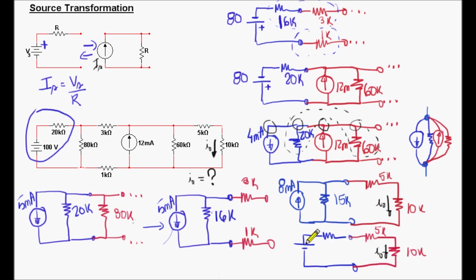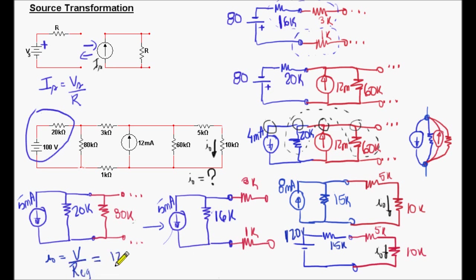Now we have a simple series circuit — all resistors are in series, simple to calculate. The resistor here will be 15k, and here I multiply 8 milliamps times 15k, giving me 120 volts. Now it is easy. We need to find I sub zero; since this is a series circuit, I sub zero is simply the voltage divided by the equivalent resistance: 120 divided by 30k, which results in 4 milliamps. And that's it. Thanks for watching.